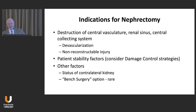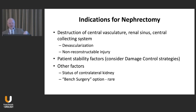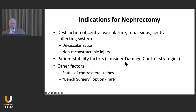Destruction of the central vasculature — the renal sinus and central collecting system — is an indication for nephrectomy. If the pedicle is gone and the central renal sinus structures are unrecognizable, you're not going to fix it. If the kidney is devascularized and the injury is non-reconstructible by anatomy, it needs to come out. Is there a damage control strategy for the kidney? If the patient is getting cold and coagulopathic but you think you could fix the kidney with a little more time, put a clip on the segmental vessels, pack the kidney, and go back at the second laparotomy.